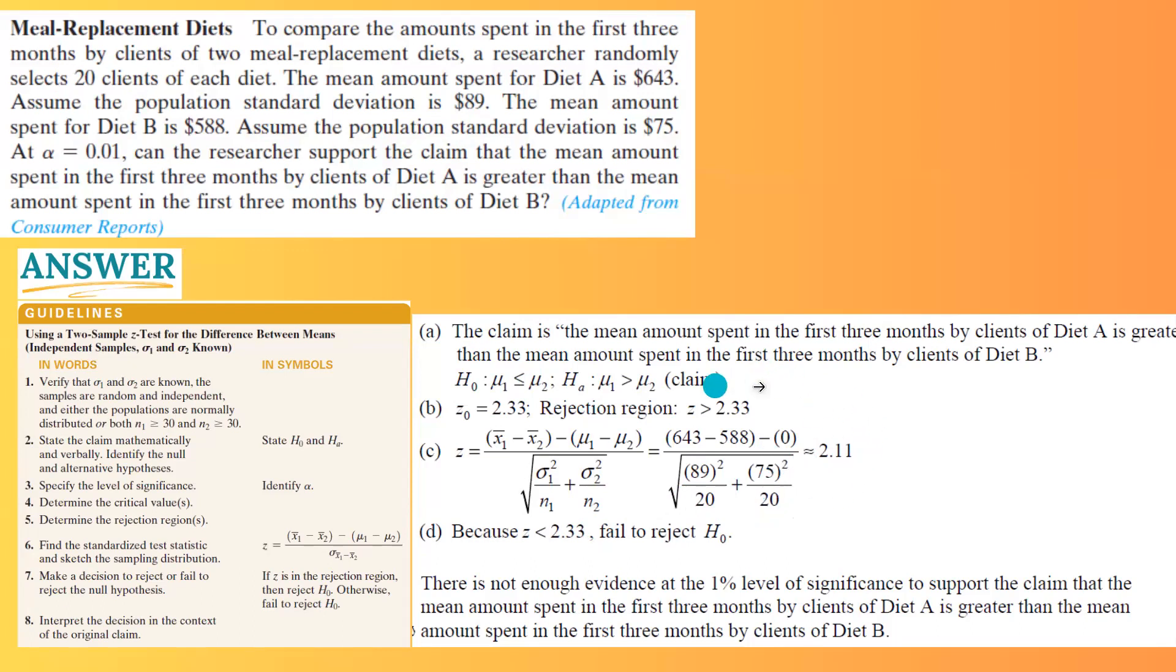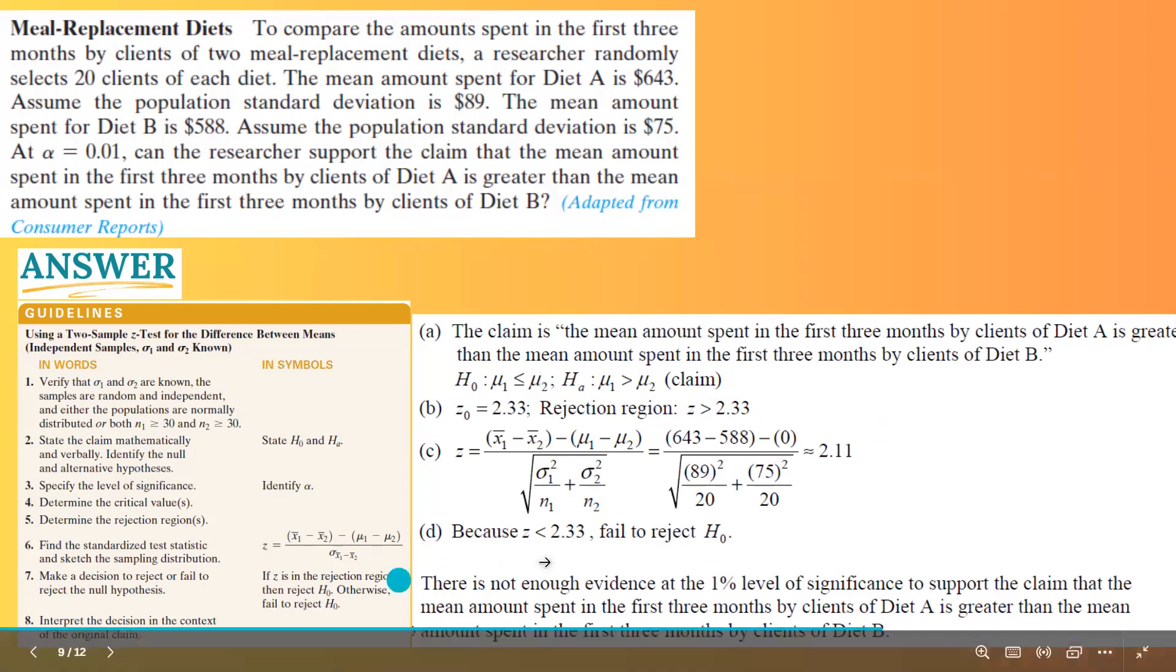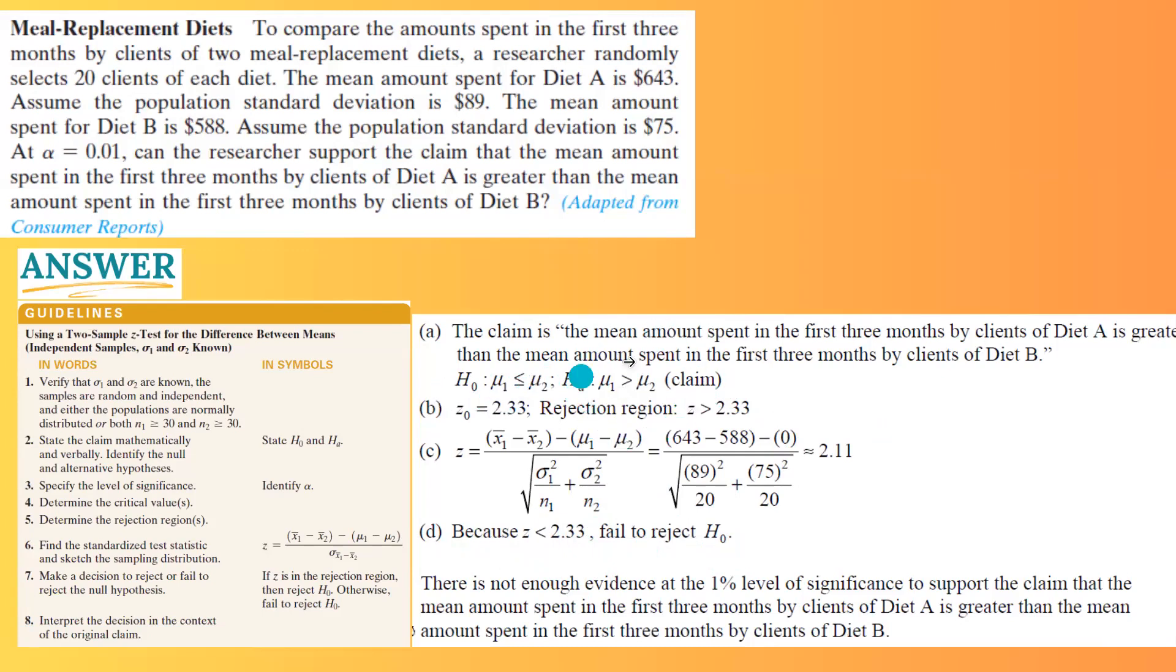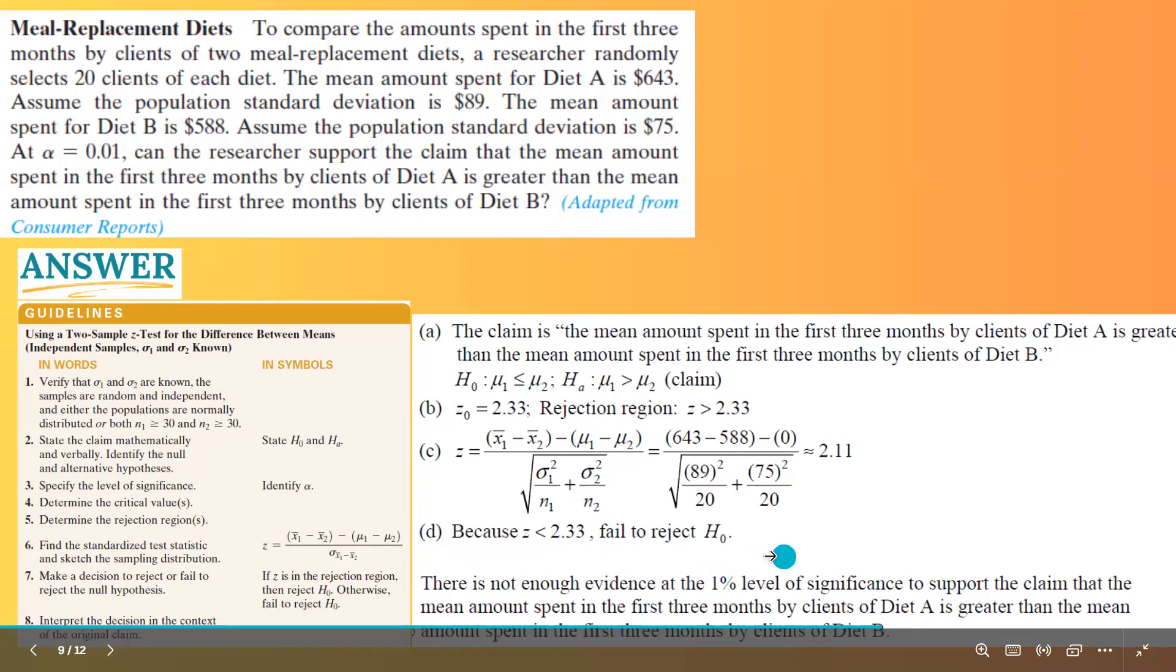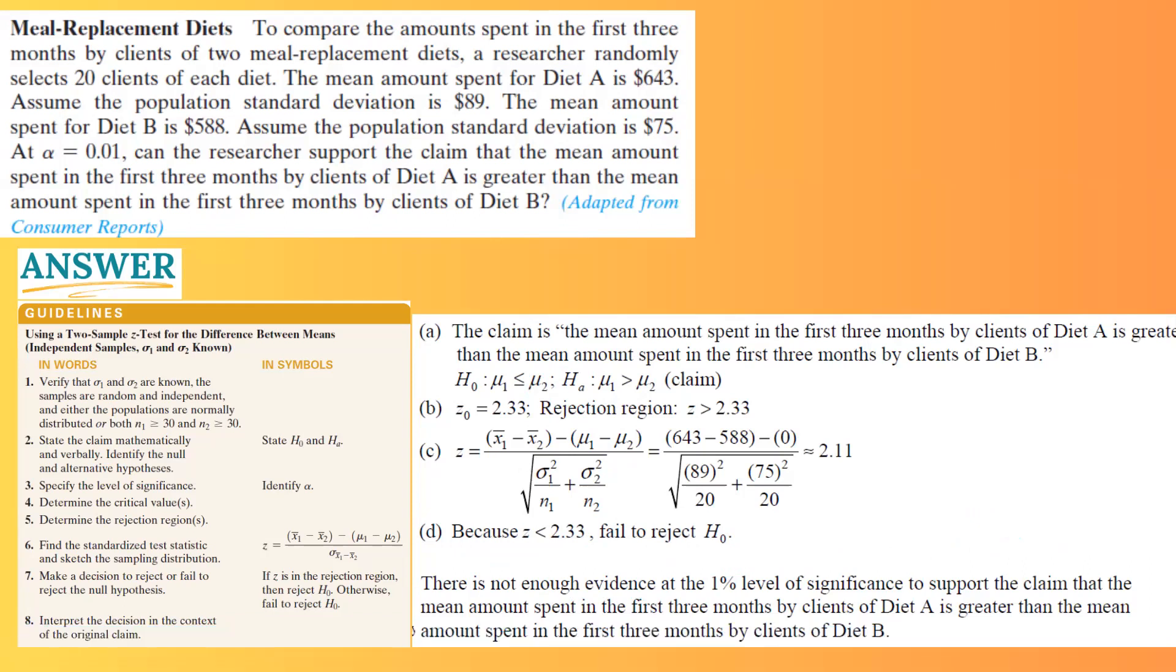Is 2.11 on the right hand side of 2.33? Remember that you have a right tail test. As long as this number is on the right hand side of 2.33, you're going to reject the null hypothesis. Since z is less than 2.33, it means that it's not in the rejection region. So you fail to reject the null hypothesis. When you fail to reject the null hypothesis, it means that you support the null hypothesis, and you're going to reject the claim. Because the claim and the alternative hypothesis are the same thing. There is not enough evidence at 1% level of significance to support the claim that the mean amount spent in the first three months by clients of diet A is more than the mean amount spent by clients of diet B.